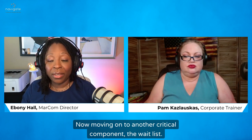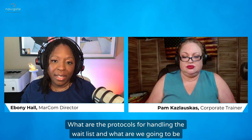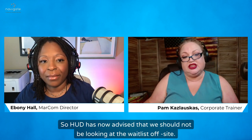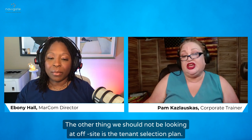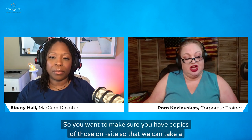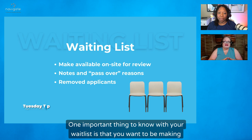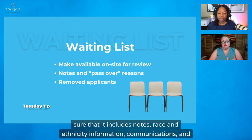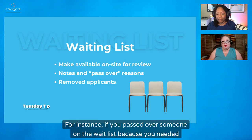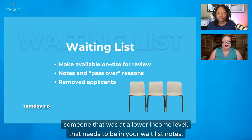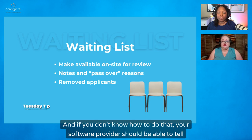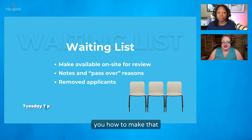Moving on to another critical component — the waitlist. What are the protocols for handling the waitlist, and what are we going to be looking for during the MOR? HUD has now advised that we should not be looking at the waitlist off-site. Similarly, we should not be looking at the tenant selection plan off-site, so you want to make sure you have copies of those on-site. One important thing to know with your waitlist is that you want to make sure it includes notes, race and ethnicity information, communication, and pass-over reasons. For instance, if you passed over someone on the waitlist because you needed someone at a lower income level, that needs to be in your waitlist notes. If you don't know how to do that, your software provider should be able to help.